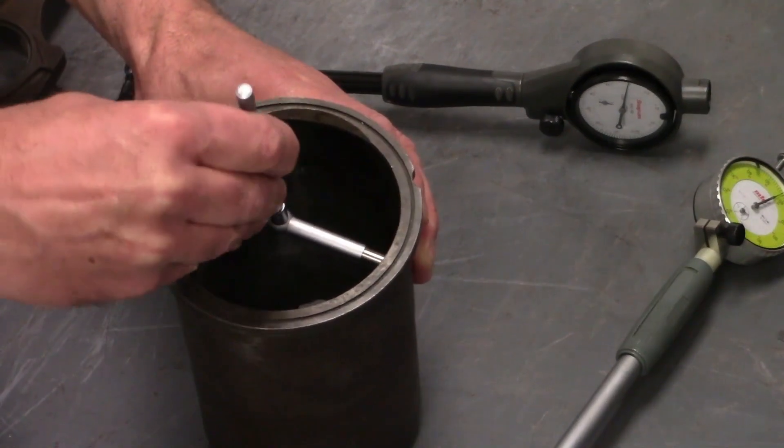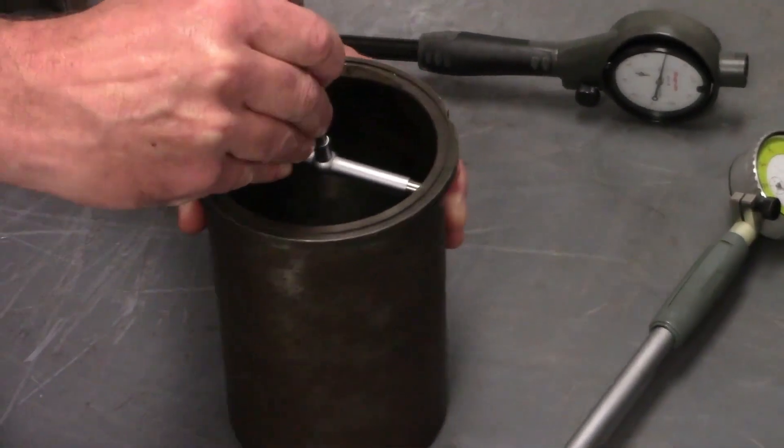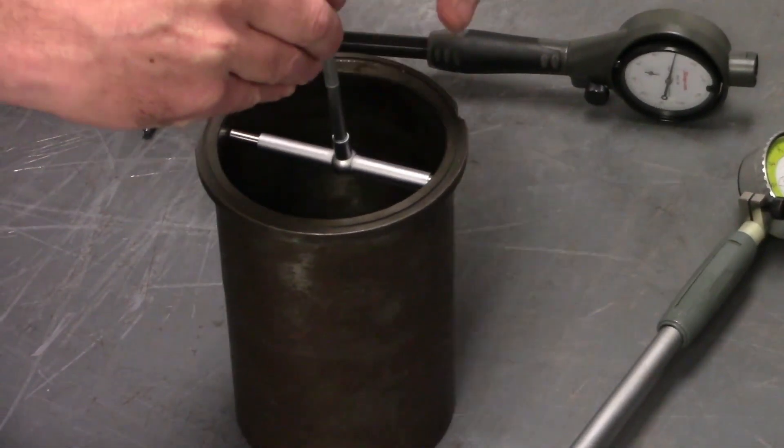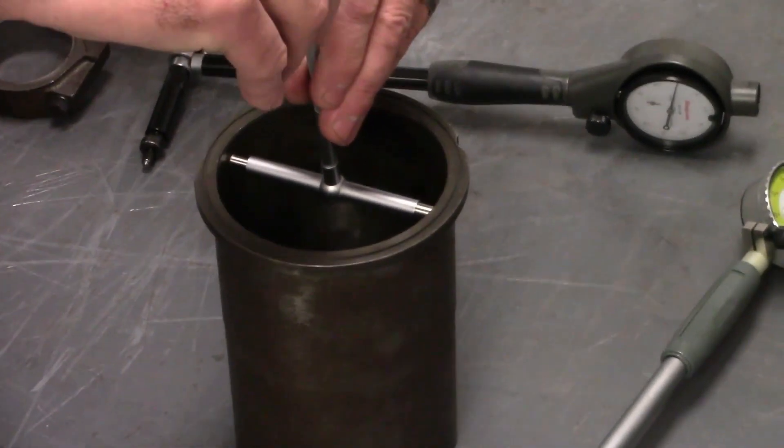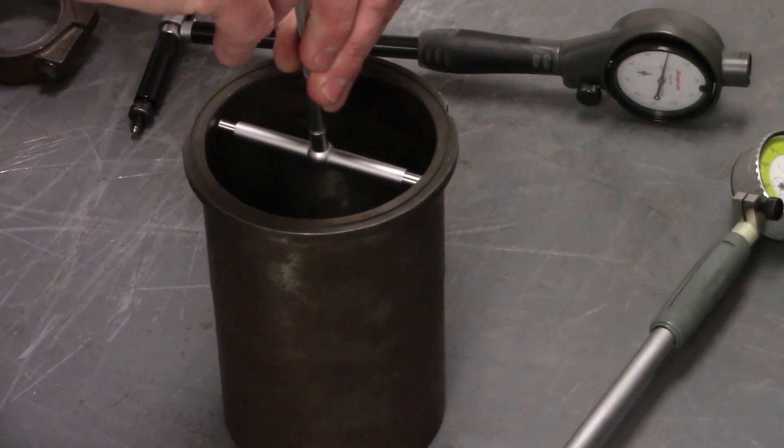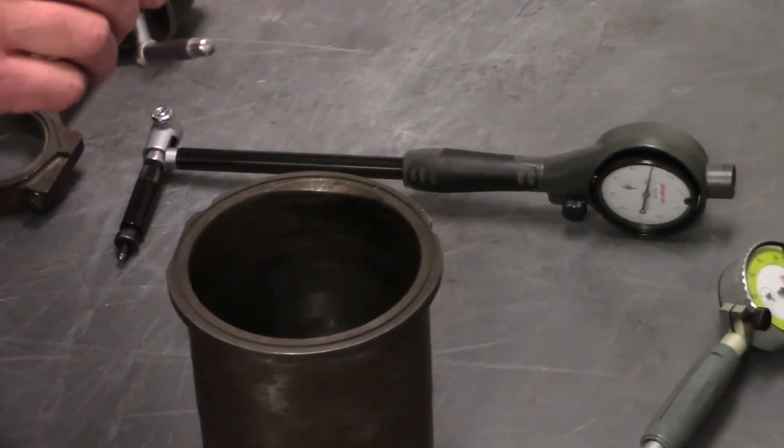You want to rock this back and forth and kind of find your center here. Once you're confident that you're centered, we're going to very gently snug up the T-gauge and remove it. At that point, this is also known as a transfer gauge.